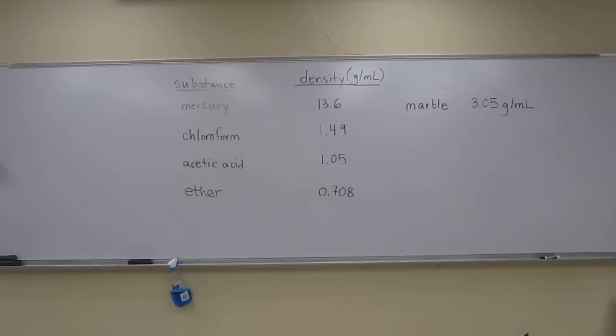Mercury, density 13.6 grams per mL; chloroform, density 1.49 grams per mL; acetic acid, density 1.05 grams per mL; and ether, density 0.708 grams per mL. If a marble with density 3.05 grams per mL is added to the cylinder, where does it come to rest?